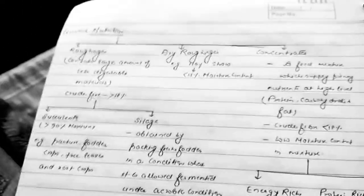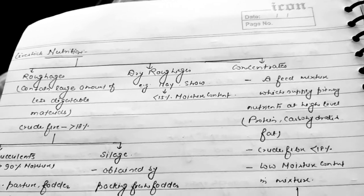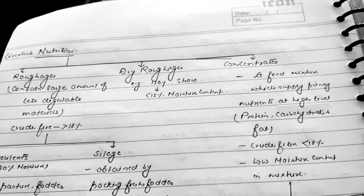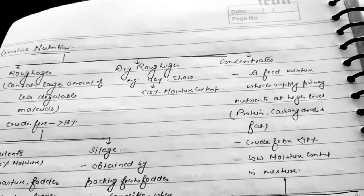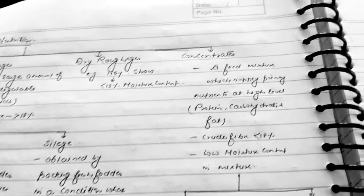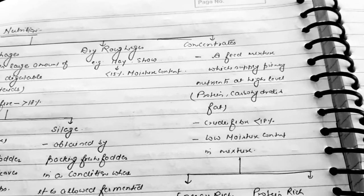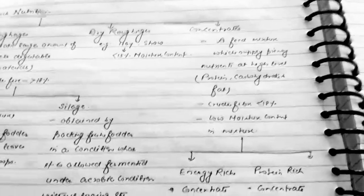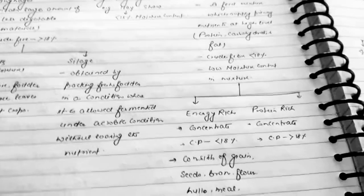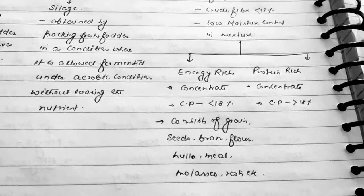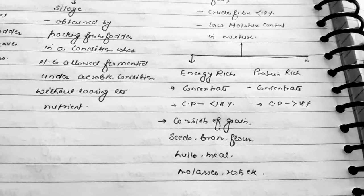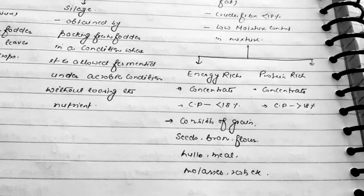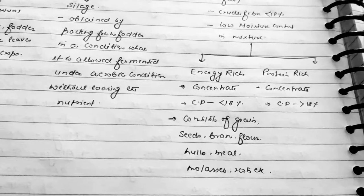Dry roughages mainly contain hay and straw, and their moisture content is less than 15 percent. Concentrates are a feed mixture supplying primary nutrients — protein, carbohydrate, and fat — at a high level, with crude fiber less than 18 percent and low moisture content. Concentrates are further classified into two types based on crude fiber content: energy-rich concentrates, which contain less than 18 percent crude fiber, and protein-rich concentrates, which contain greater than 18 percent crude fiber. Energy-rich substances include grains, seeds, bran, flour, oil meal, molasses, and fruits.